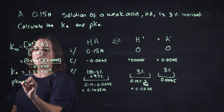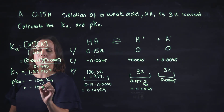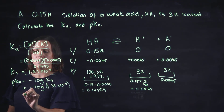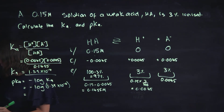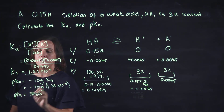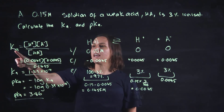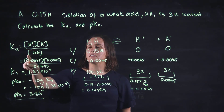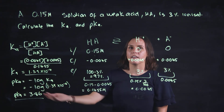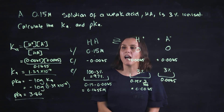The pKa equals the negative log of Ka, so pKa = −log(1.39 × 10⁻⁴), which gives 3.86. To summarize: Ka is products over reactants, and pKa just means the negative log of Ka. This is a weak acid ICE table calculation.